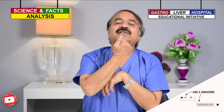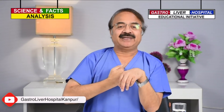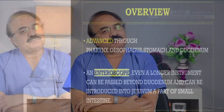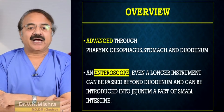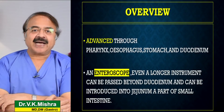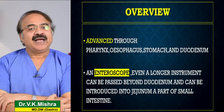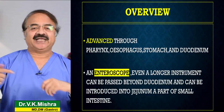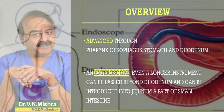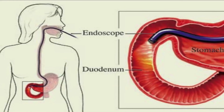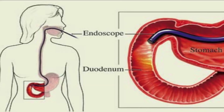जहां तक endoscope का सवाल है, यह गले में से पास होता है, आपकी खाने की थेली में जाता है, और इससे आगे का जो portion है जिसे duodenum कहते हैं, यह duodenum में जाता है। इस पूरे area को यह examine करता है। अगर कुछ ऐसा है कि हमें इससे आगे की intestine भी देखनी है, that means part of small intestine देखनी है, जैसे jejunum देखनी है।